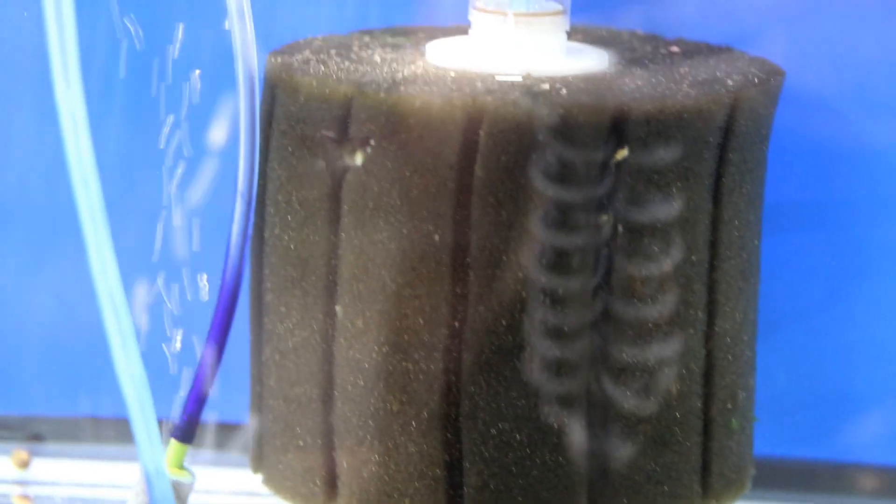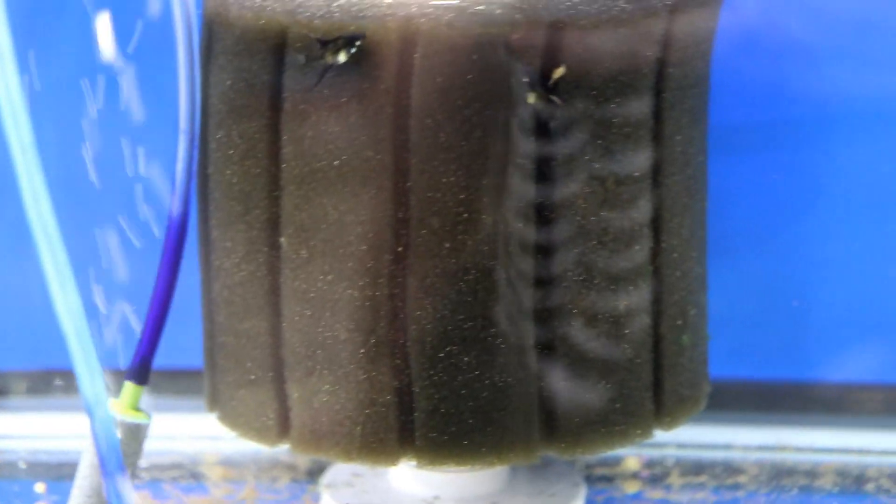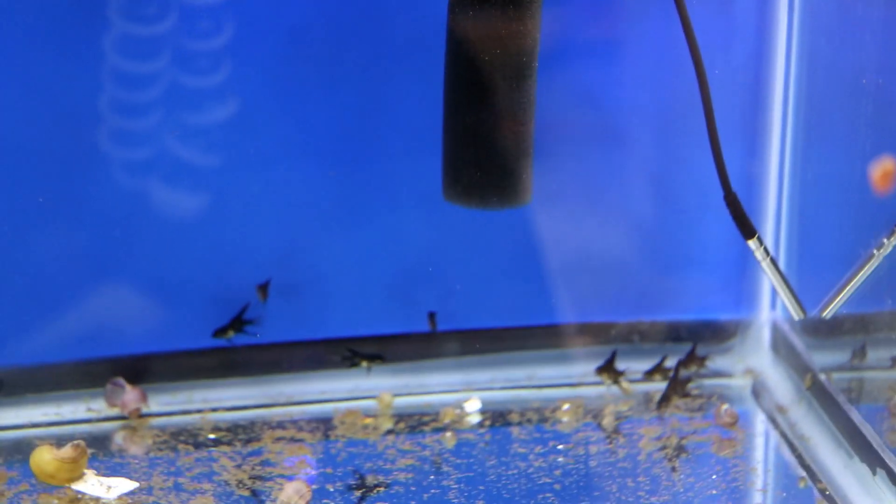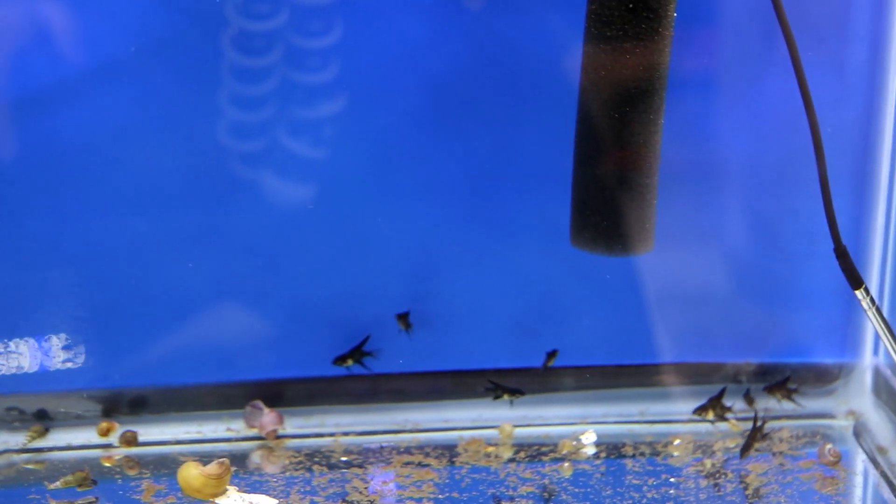And so what I'm going to start doing is I'm going to start removing the fry when they get about that size and putting them in there. So for right now, I just threw them down in here and I've noticed I put 12 of these guys in here and it looks like all 12 of them are alive. So again, that seemed to be one of the big problems that I was having, is just keeping them in those small containers for just too long.